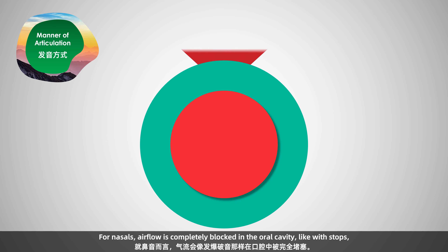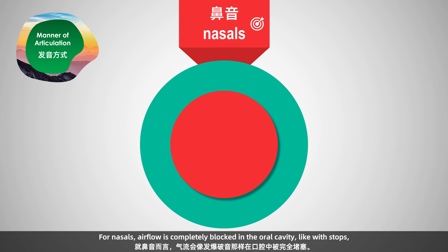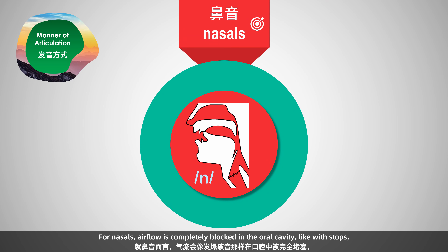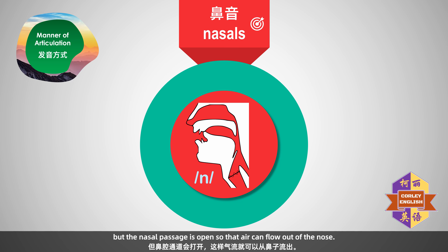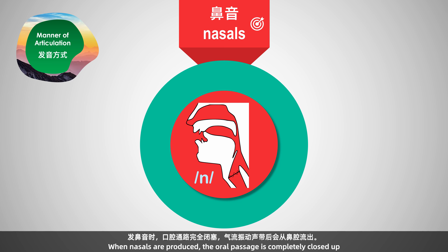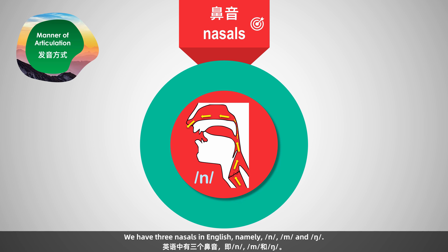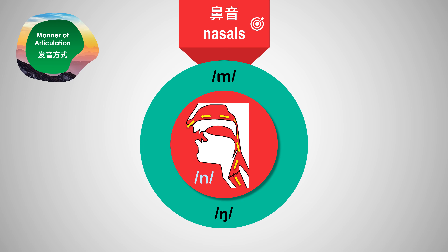For nasals, airflow is completely blocked in the oral cavity, like with stops, but the nasal passage is open so that air can flow out of the nose. 发鼻音时，口腔通路完全闭塞，气流震动声带后会从鼻腔流出。We have three nasals in English, namely /m/, /n/, and /ŋ/.